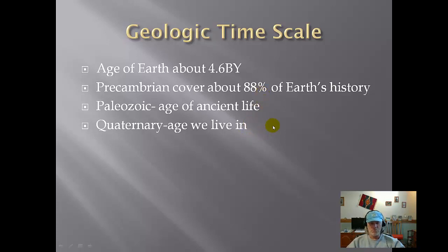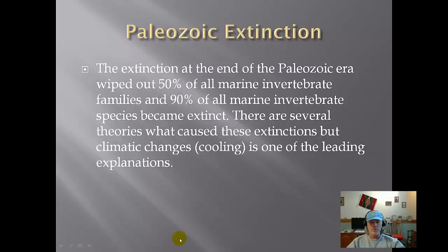A couple of things you might want to know: Paleozoic means the age of ancient life, and the Quaternary is the age in which we currently live. There were a couple of big extinctions. The first one occurred at the end of the Paleozoic era — all these marine critters, and the Earth was covered by a lot of sea at this time, died off. This was due to cooling of the Earth. Most marine critters like warmer water, and as climatic cooling occurred, many of these critters died off.